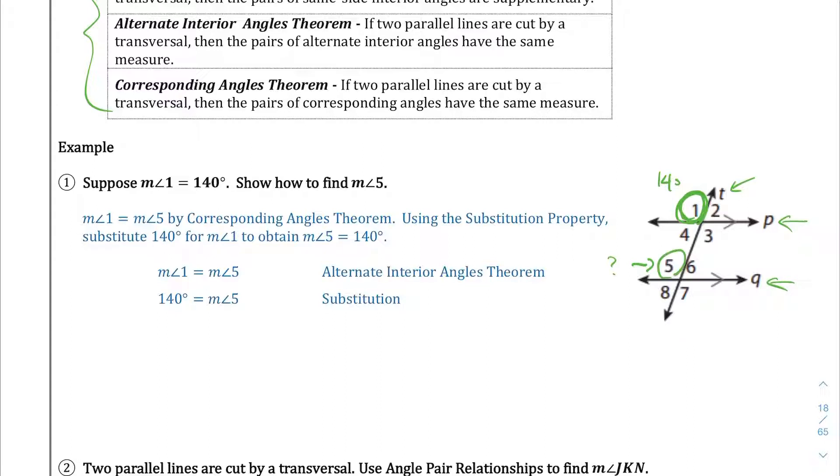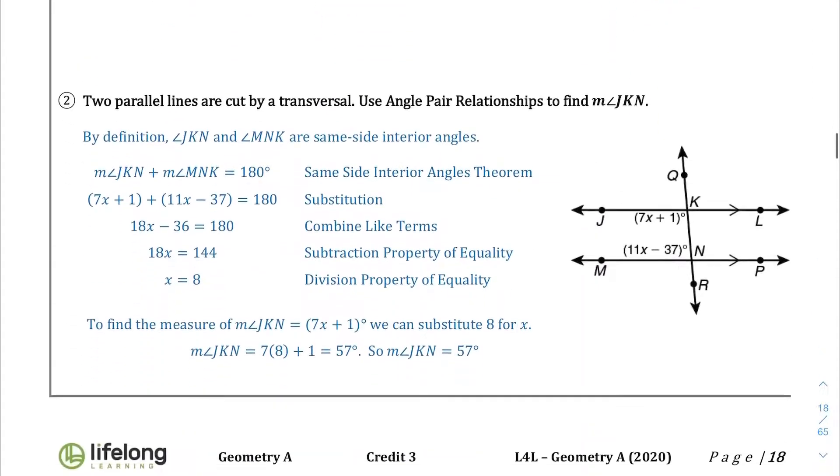Measure 1 is going to equal the measure of angle 5. I think they wrote the wrong statement here. We'll need the curriculum team to fix that. I think this is supposed to be corresponding angle theorem. So if we know that angle 1 is 140, we have to conclude that also angle 5 is 140 as well, because of the corresponding angle theorem by the virtue of substitution.